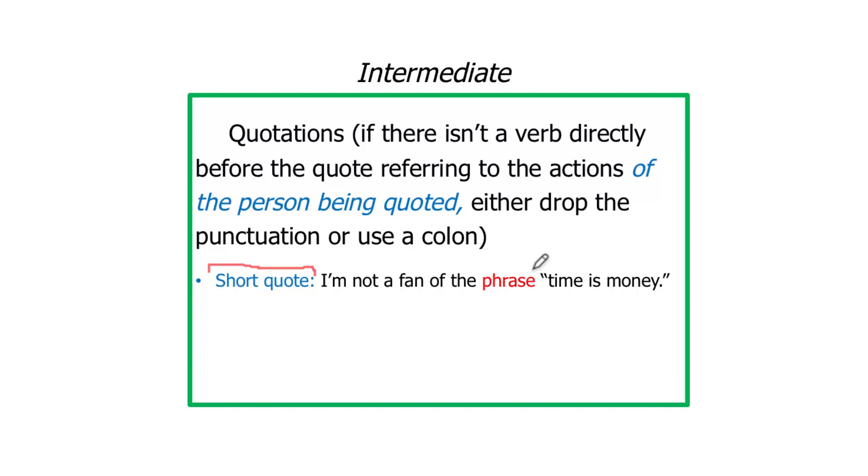Here's an example of a short quote. I'm not a fan of the phrase 'time is money,' which is attributed to Ben Franklin. There is no comma here. Why? There is no verb here that is referring to Ben Franklin's actions. Time is money was quoted by Ben Franklin, but 'the phrase,' that's just a noun. If she said 'I really didn't like it when Mr. Franklin said time is money,' then there would be a comma because 'said' is a verb that was performed by the quoted. But here we just have a noun, so there is no punctuation at all.